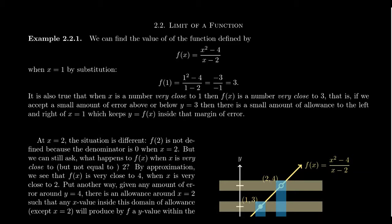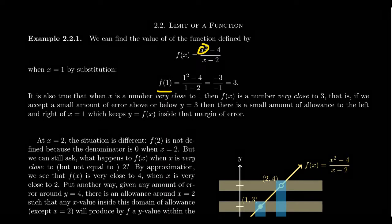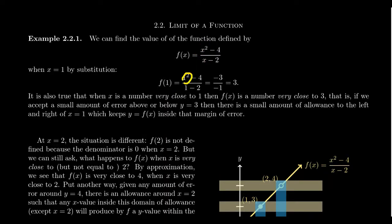Imagine we have a function f(x) equals x squared minus 4 over x minus 2. This is a standard rational function, and we might be asked to evaluate what is f of 1. If we were just to directly substitute in the value x equals 1 of this function, what would we get?